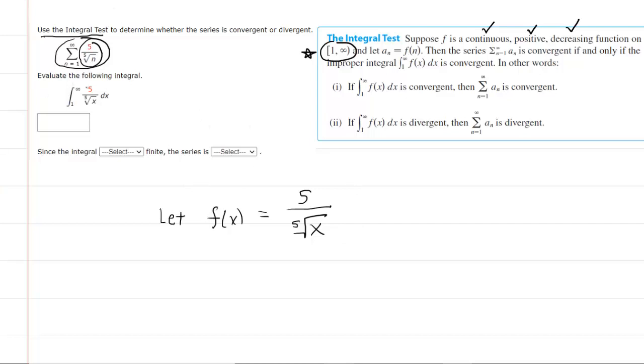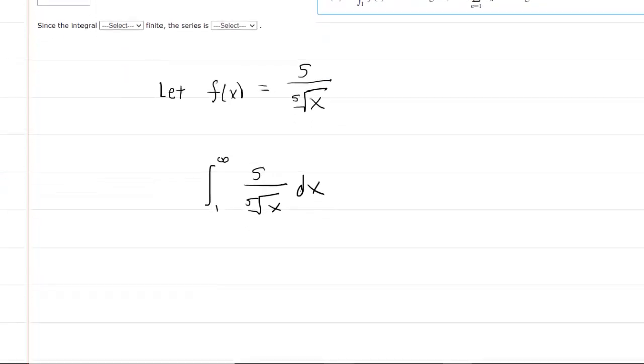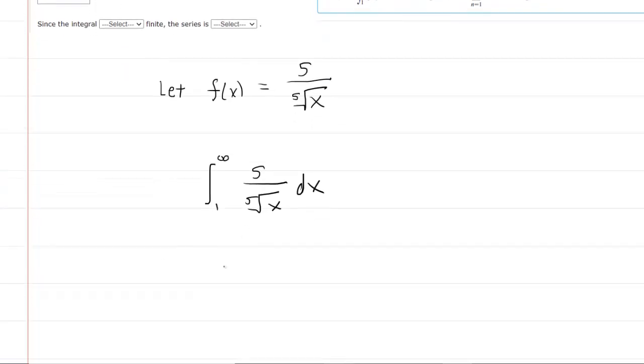That would be to actually evaluate this integral right here. So this is an improper integral. You're going to evaluate it from 1 to infinity of your function. We remember from a previous section that, in order to proceed here, we have to replace the infinity with a variable. We typically use the variable t, and that works as long as we take the limit as t approaches infinity of our integral.